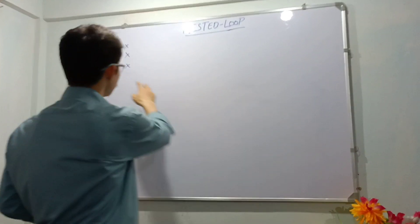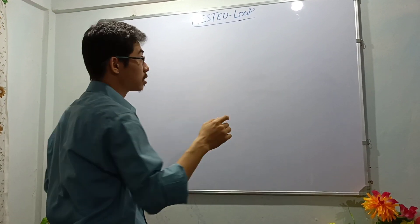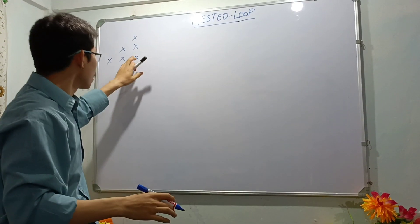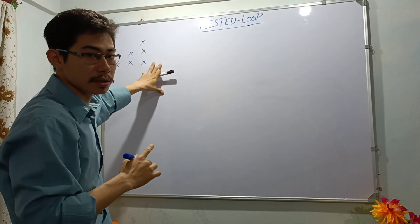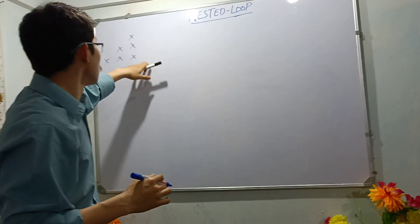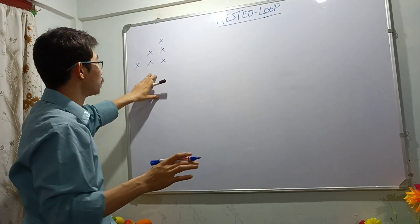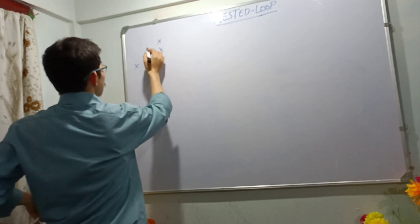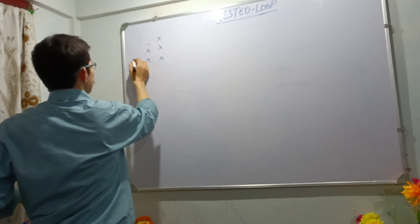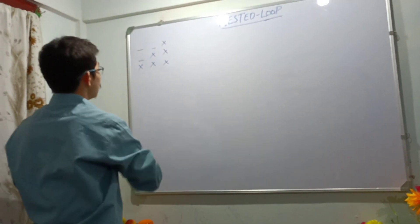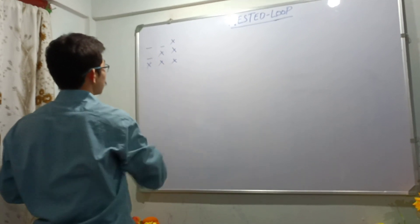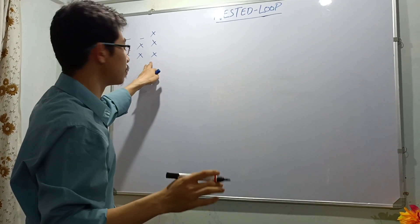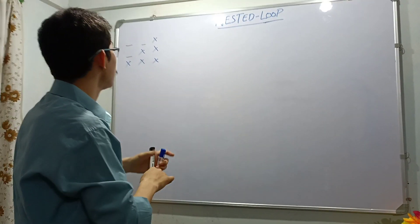The problem looks like this, using the concept of nested loops. When a problem like this is given, what I basically do is make some gaps — there are two gaps here. If you have seen my earlier videos related to this topic, I explained how to make patterns.